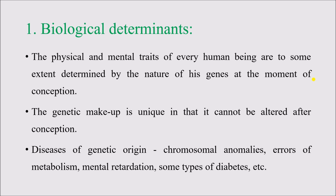The physical as well as mental characteristics of every person are different from each other, and this is determined by the nature of their genes. The genetic material, genetic structure, and genetic makeup are unique and cannot be altered after conception — this is non-modifiable. There are many diseases of genetic origin, for example chromosomal abnormalities, errors of metabolism, mental retardation, and some types of diabetes. These things are predetermined and cannot be modified, making biological determinants an intrinsic factor for the person.